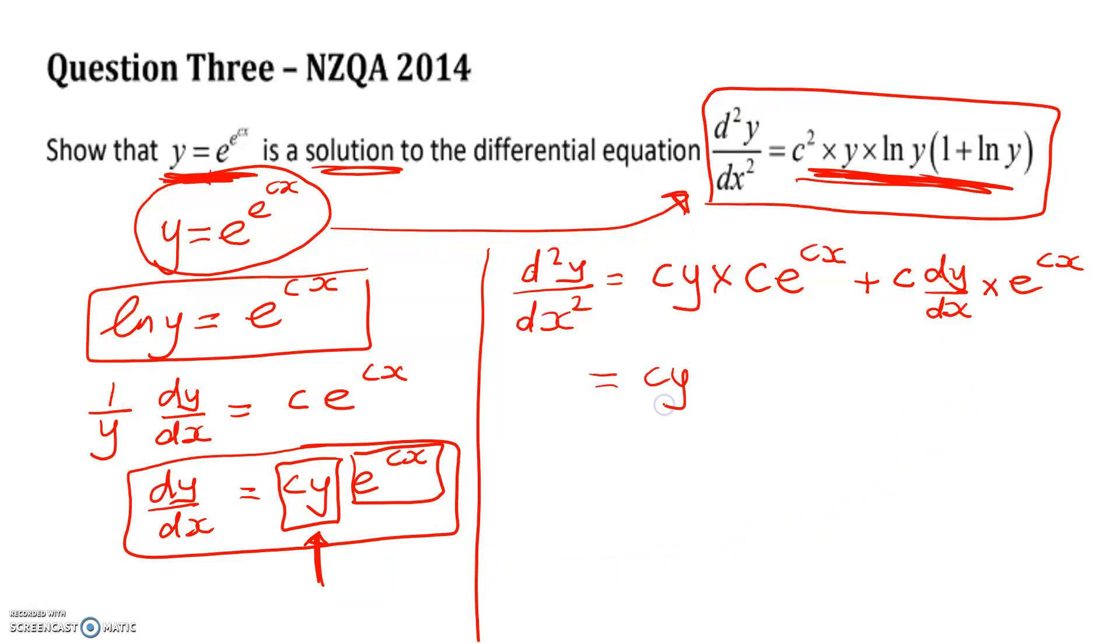So now we've got cy. Now, e to the cx is equal to the log of y. So I'll make that change now, plus c times cy, e to the cx, times e to the cx. Right, and I'm doing this with one eye on where I'm going.